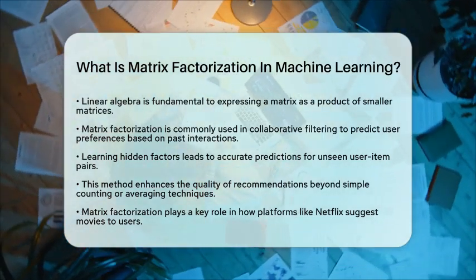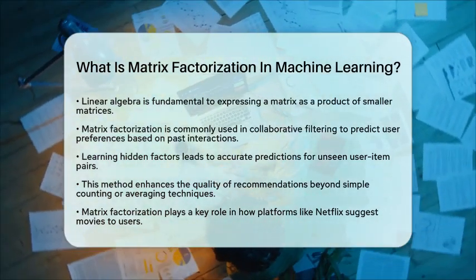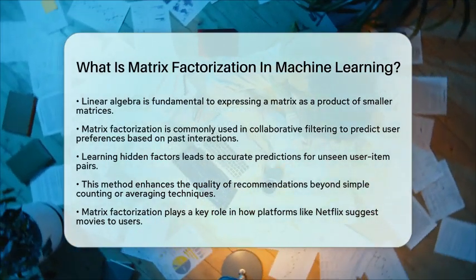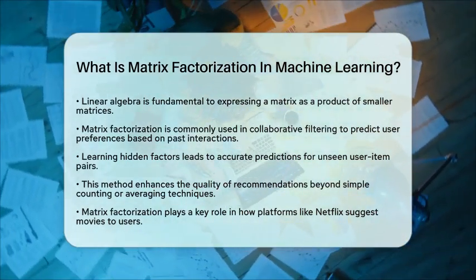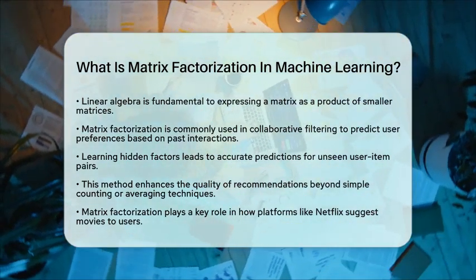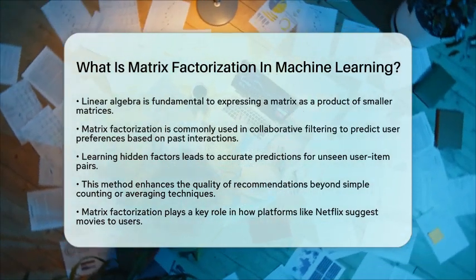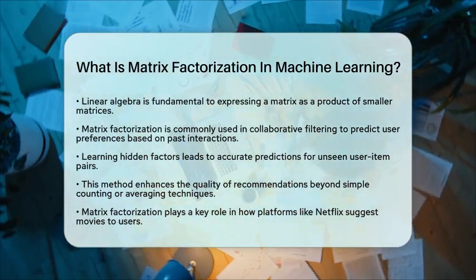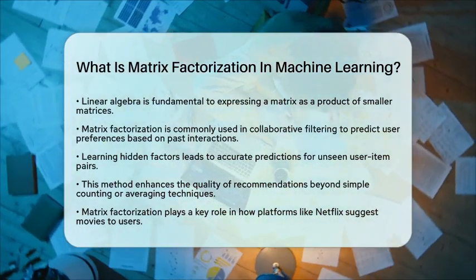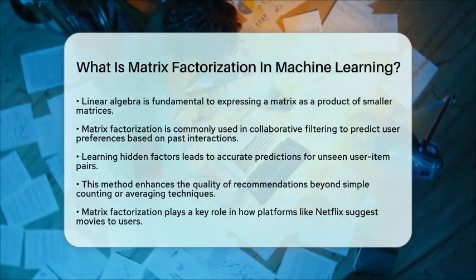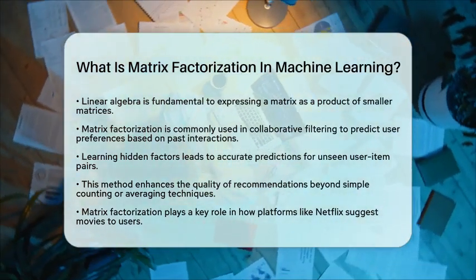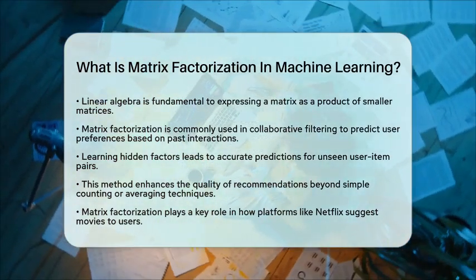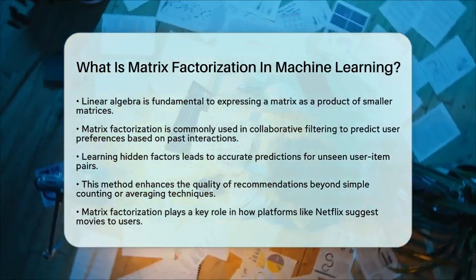This approach significantly improves the quality of recommendations, going beyond simple counting or averaging methods. In summary, matrix factorization is a powerful technique in machine learning that breaks down large matrices into manageable parts. It helps in predicting user preferences and understanding complex datasets, making it a key tool in the world of recommendation systems.